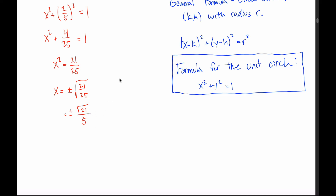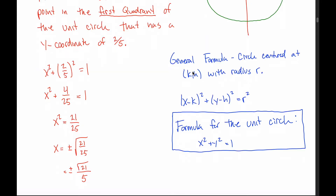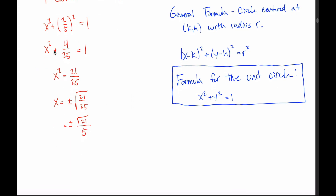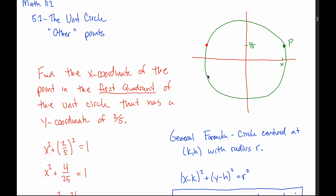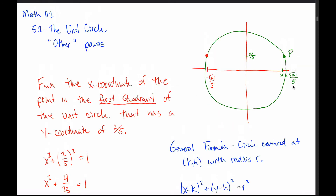Why two answers? Because the formula doesn't know which quadrant we're in. There are two points on the unit circle with y-coordinate 2 fifths — one in the first quadrant with positive x, and one in the second quadrant with negative x. Since the problem specifies the first quadrant, the x-coordinate must be positive. So the answer is positive √21 / 5. Specifying the quadrant is what makes the question unambiguous.